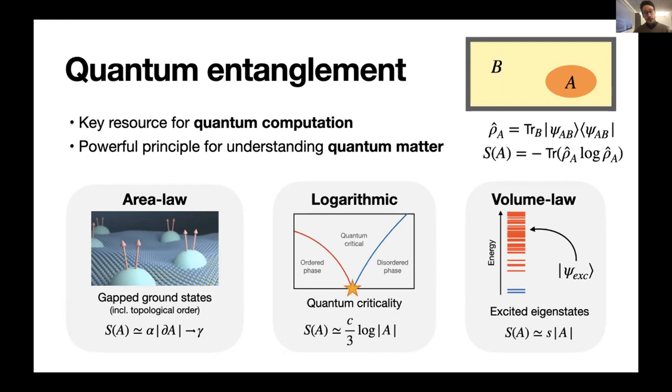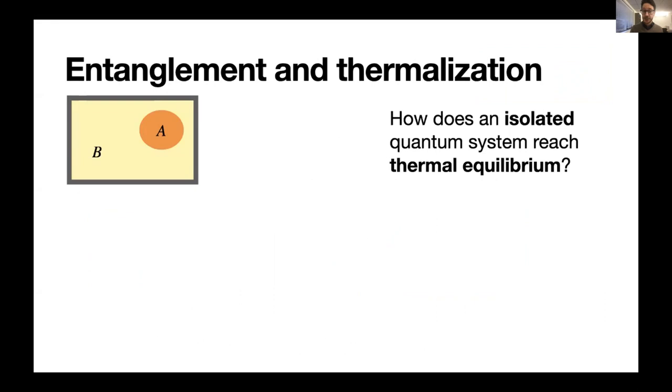Then we can look at gapless ground states, such as quantum critical points. And here we may have a logarithmic divergence of entanglement. And finally, we can look at, for example, highly excited eigenstates of a Hamiltonian in which we have volume law scaling. So finite density of entropy with all degrees of freedom in the region contributing some entanglement. And in particular, this latter case is important for understanding the basics of quantum thermalization. So how an isolated quantum many-body system can approach thermal equilibrium, which can sound a little counterintuitive at first because we have some intuition that equilibration is an irreversible process and quantum dynamics, on the contrary, is perfectly unitary and reversible, at least in an isolated system.